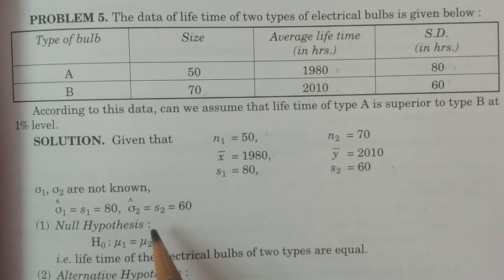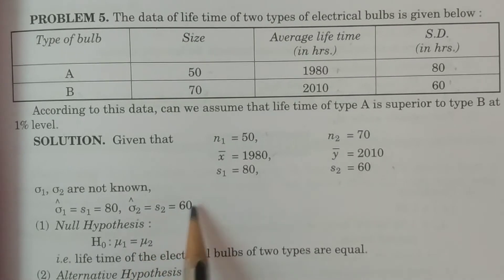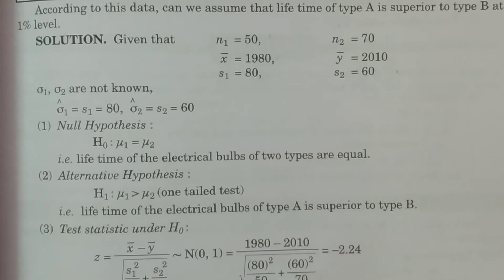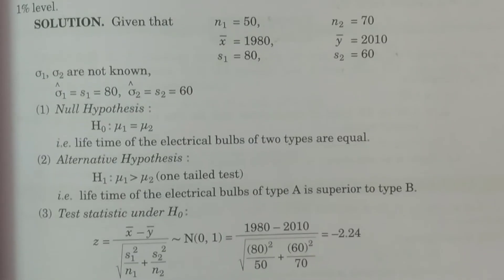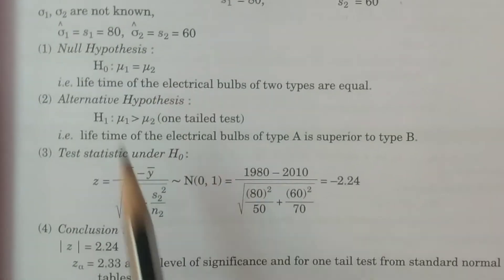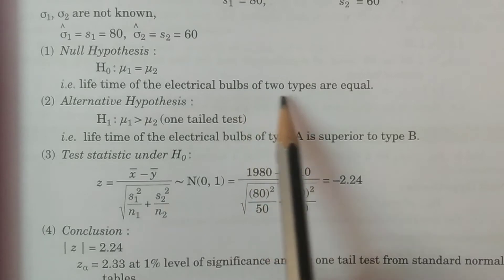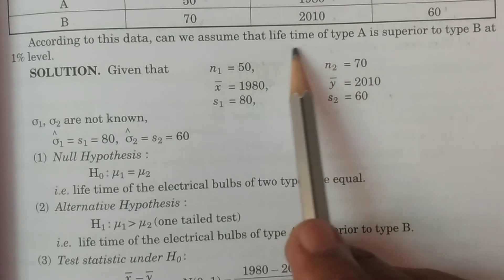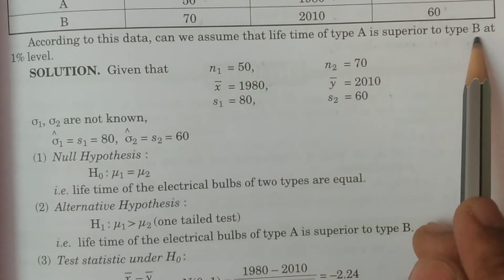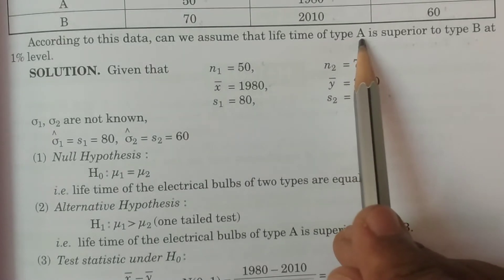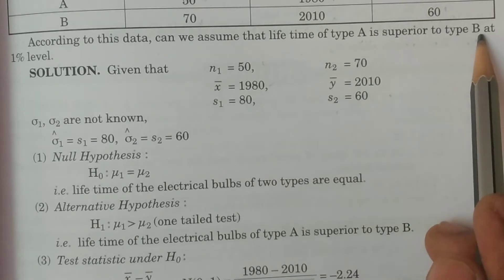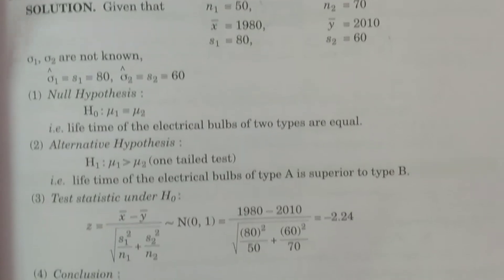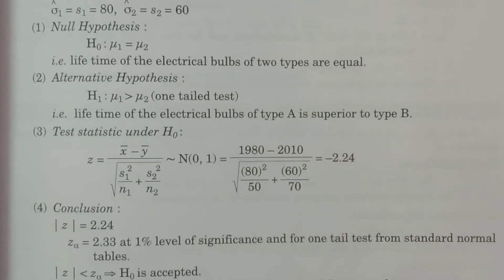Since σ1 and σ2 are not given, we estimate with S1 and S2. Now we consider four important points. First: the null hypothesis H0: μ1 = μ2, that is, the lifetime of the electrical bulbs of the two types are equal. We consider this because the question asks us to test whether type A is superior to type B — and in the null hypothesis we always set them equal.